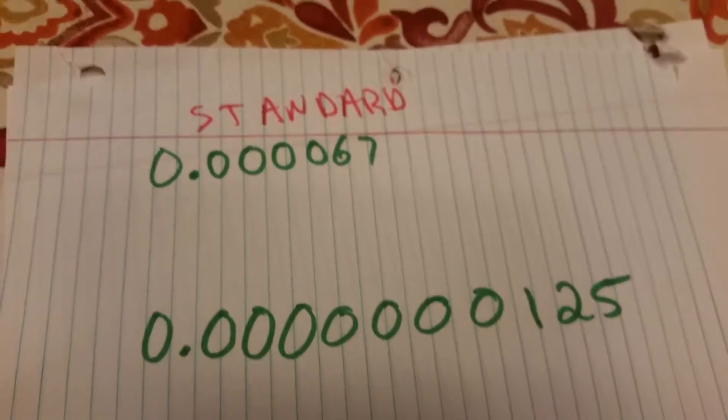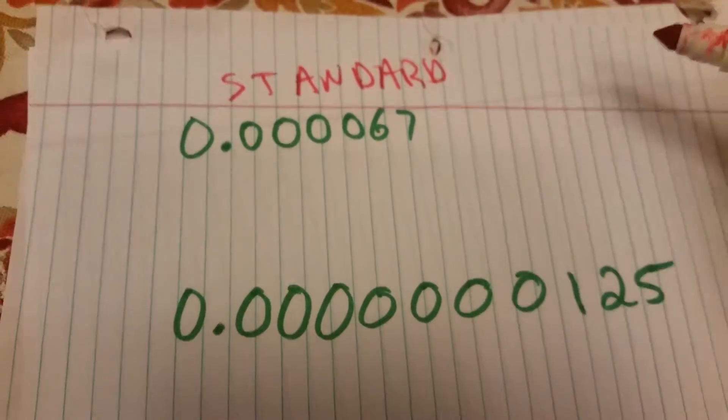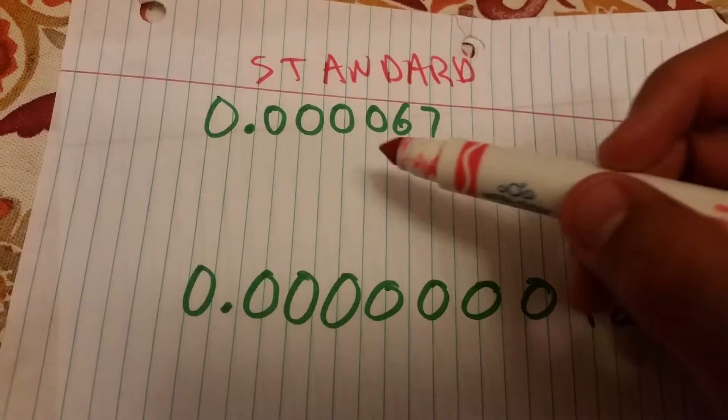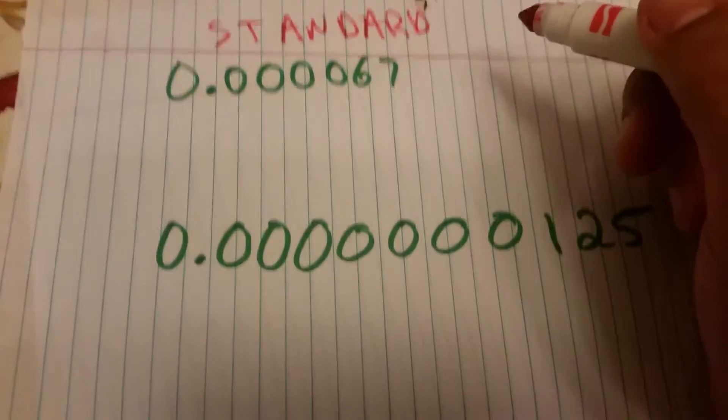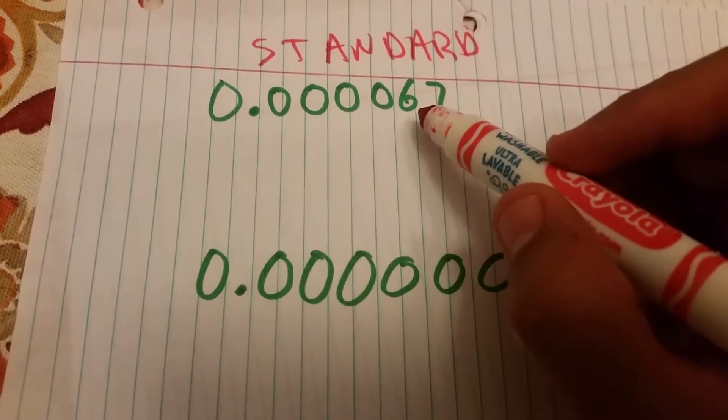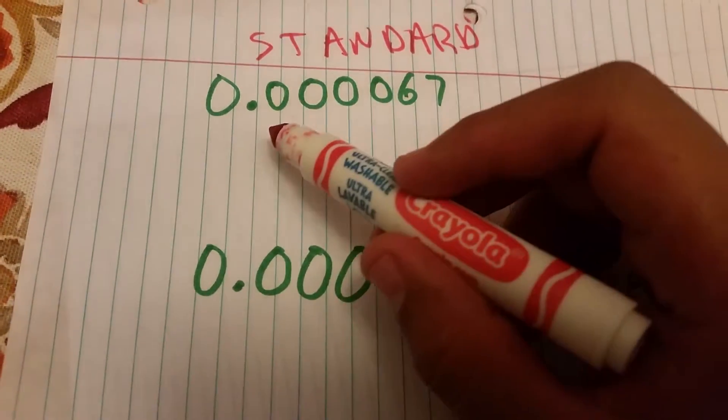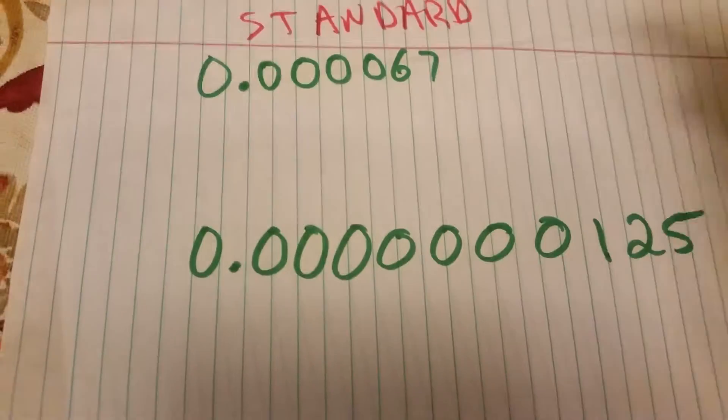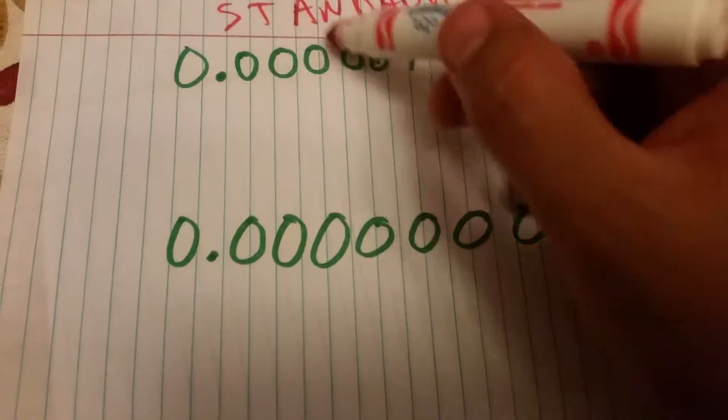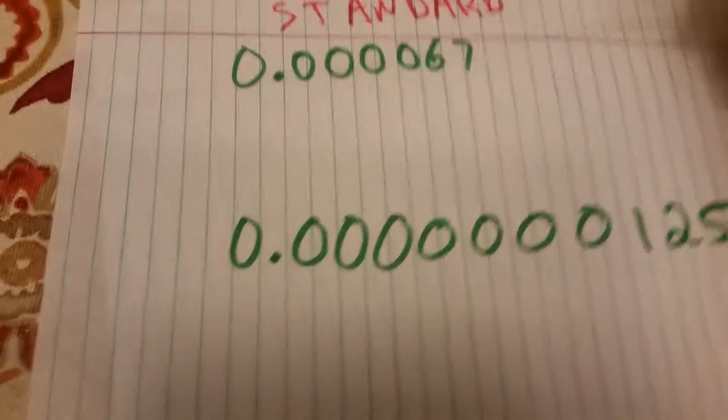Alright, here in this video first we're going to go over standard notation to scientific, and we're going to start with very small numbers. Okay, we're going to do two small numbers and we're going to switch them to scientific notation. So starting with this one here is a 0.000067 and I'm going to switch it to scientific notation. As you can see, this is a very small number.